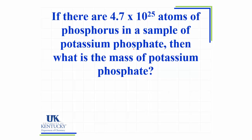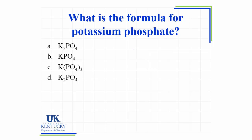Now let's look at a slightly different problem. If there are 4.7 times 10 to the 25th atoms of phosphorus in a sample of potassium phosphate, then what is the mass of potassium phosphate? Notice that the formula for potassium phosphate is not given, so that's going to be the first thing we have to figure out. The formula is K3PO4. Remember that potassium in an ionic compound has a plus 1 charge, phosphate is a polyatomic ion with a charge of 3 minus, and in order for there to be a balance of charge, I have to have K3PO4.